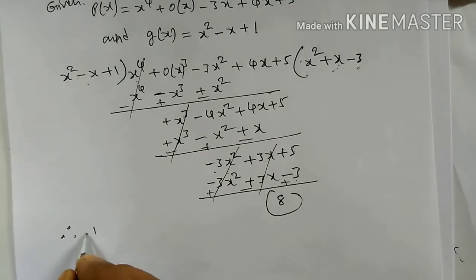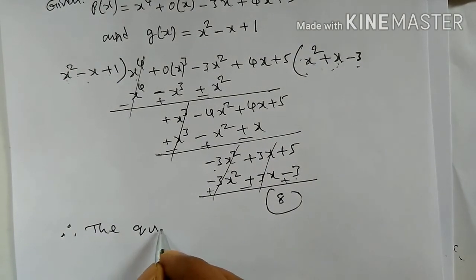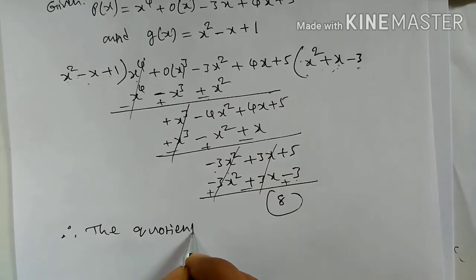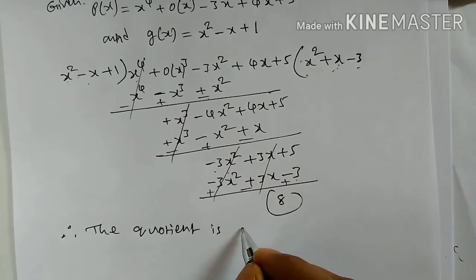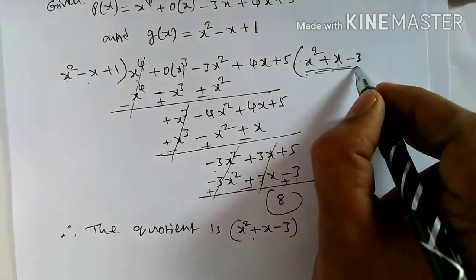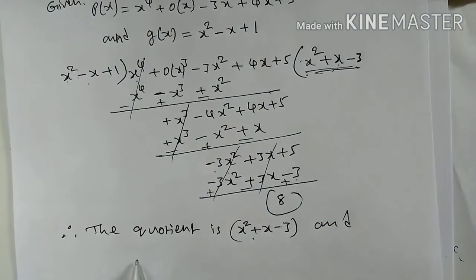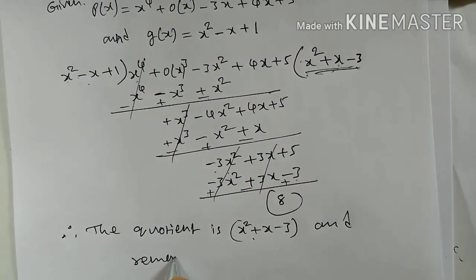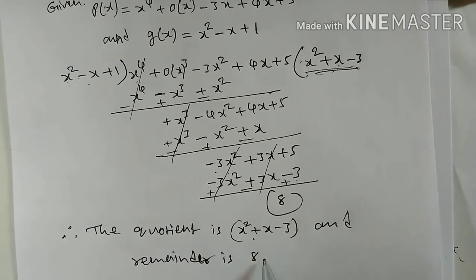Therefore, the quotient is X square plus X minus 3 and the remainder is 8.